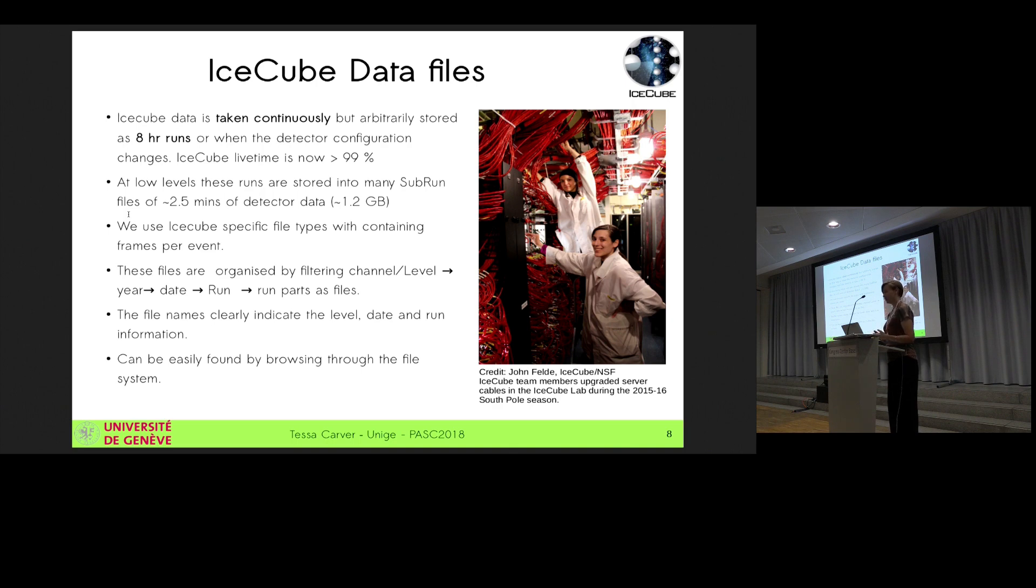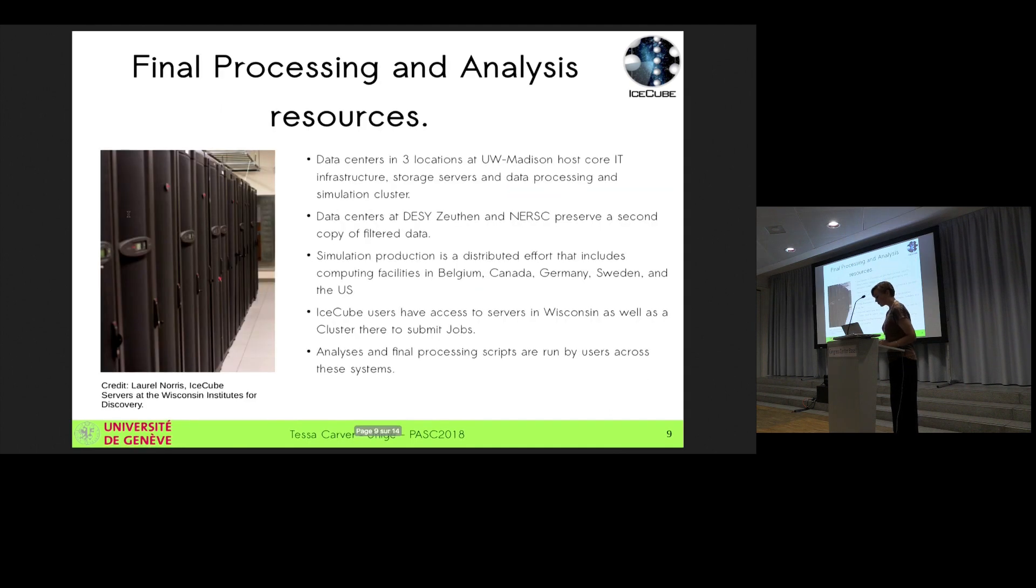And then these are stored very simply using the channel of the data filtering, the year and the level, the year, the date, and then the run number. So anyone who's looking for a new file, they want to see if there's any, if it's finished processing yet, it's pretty easy to navigate around the system and find what you want to use. And yeah, this is just a fun, this is not the data, but this is just at the IceCube lab itself, people just changing the cabling.